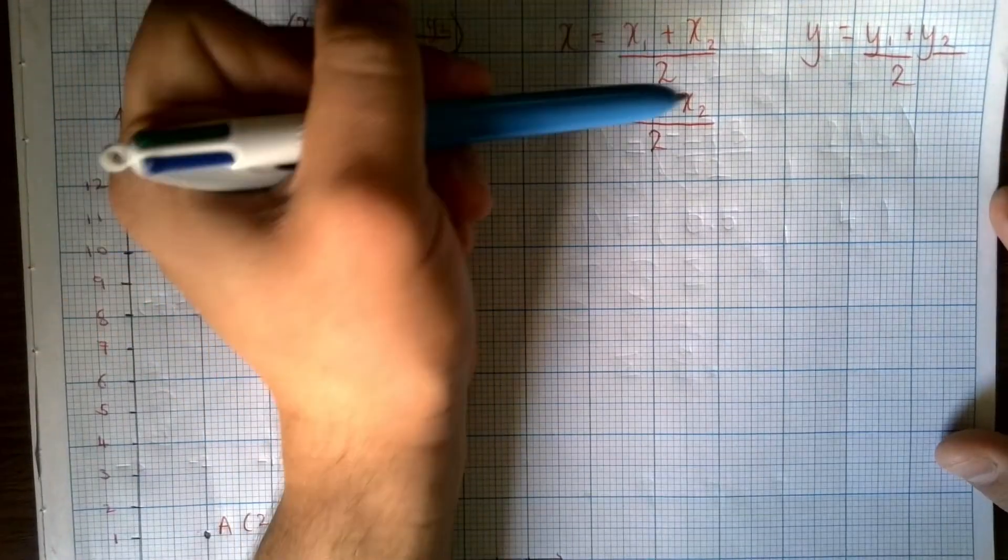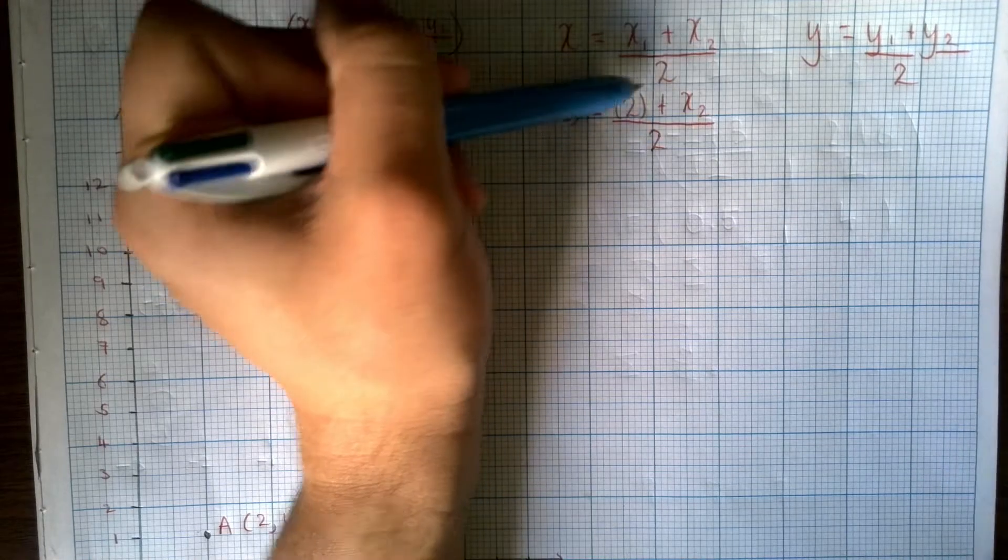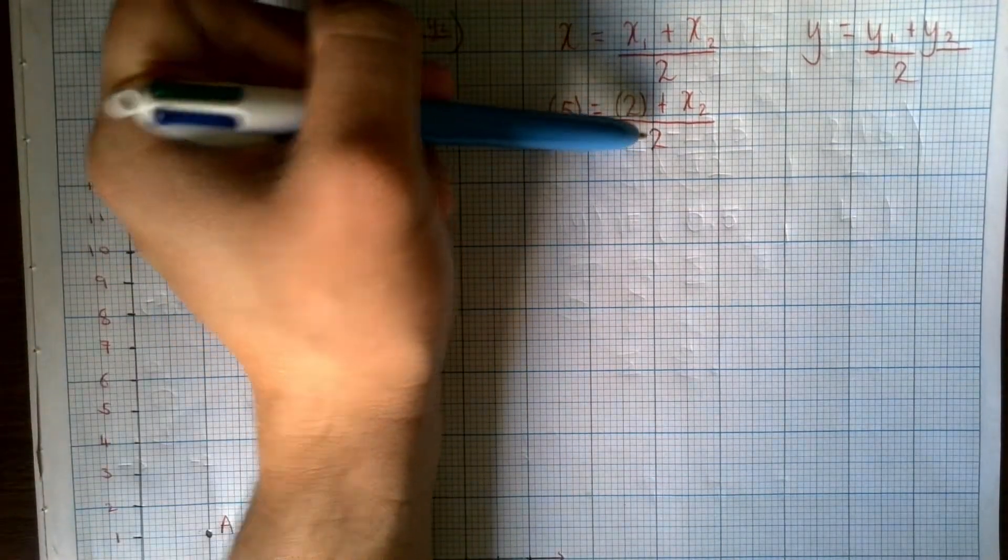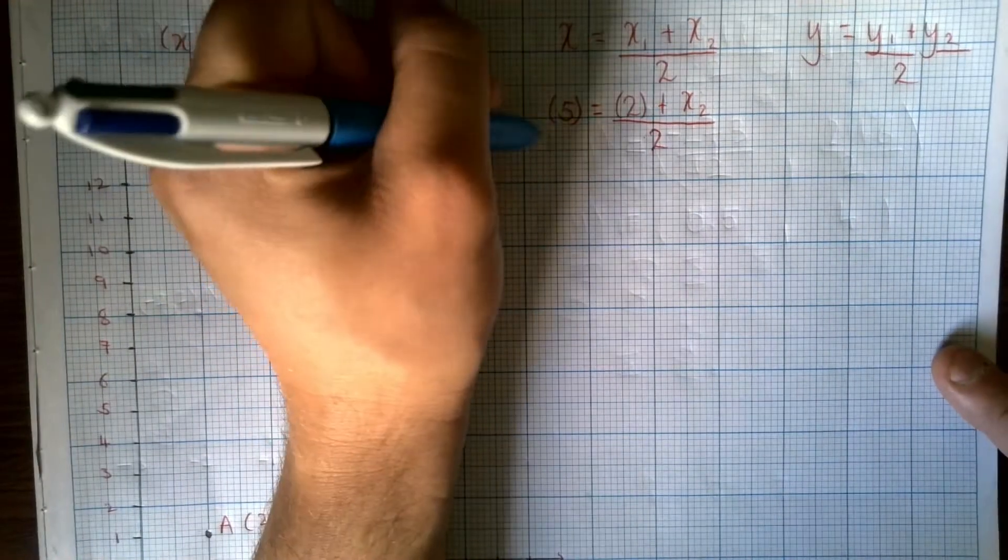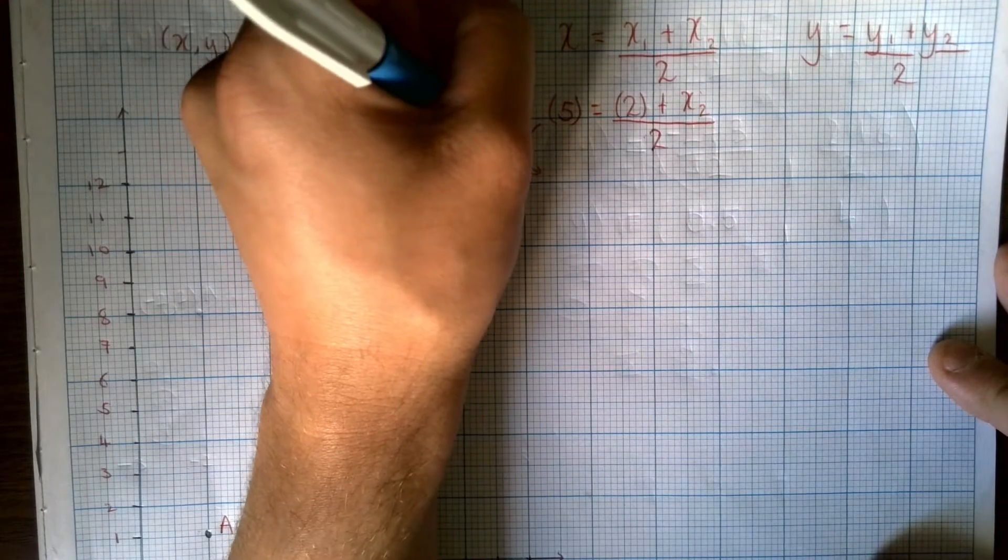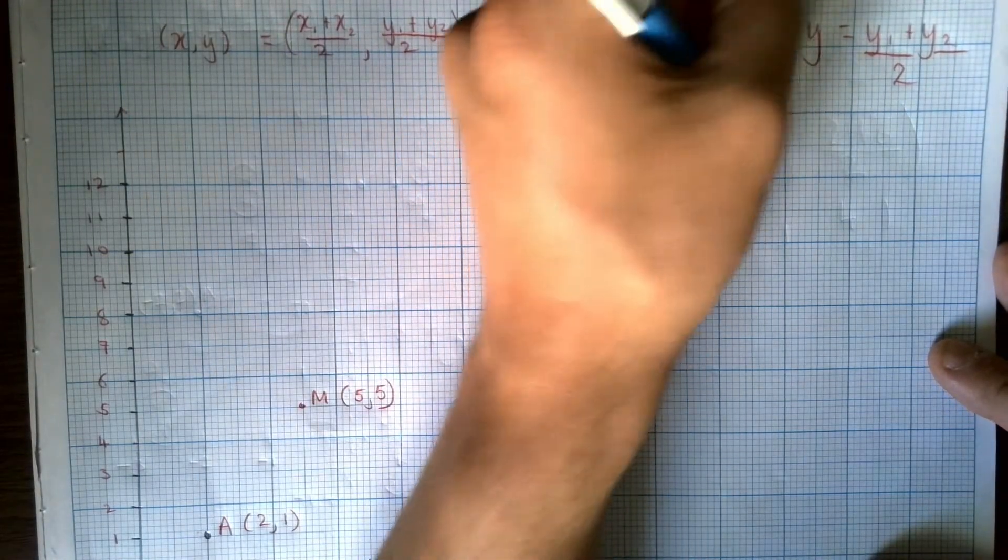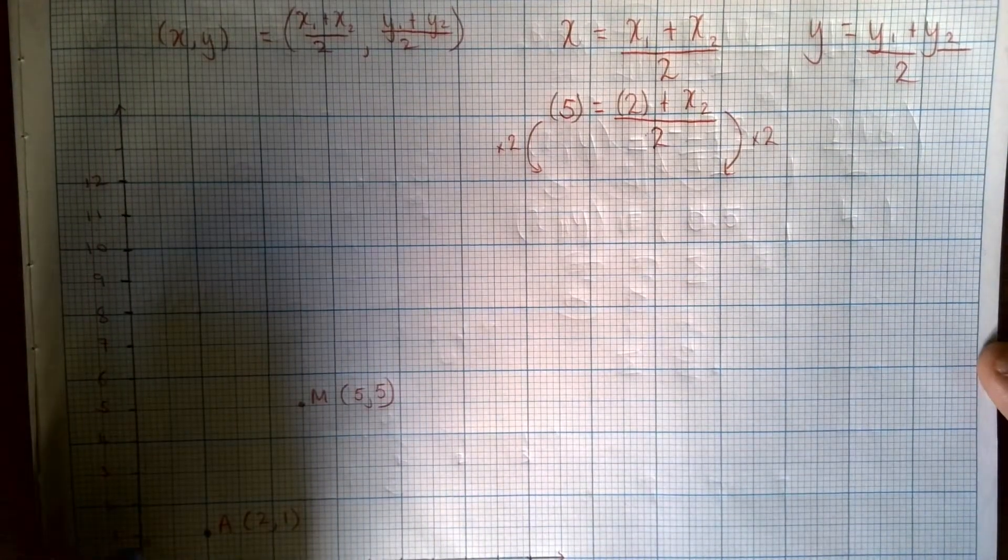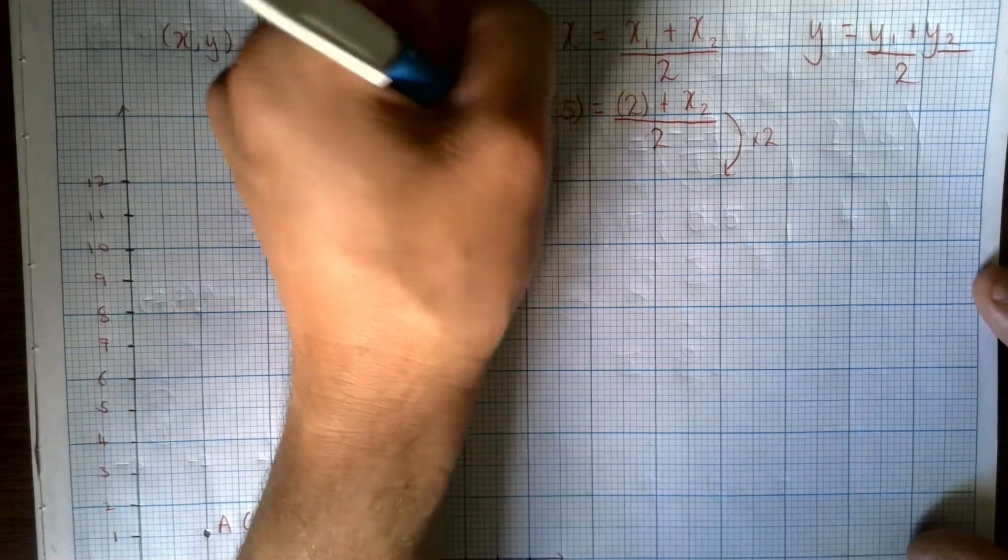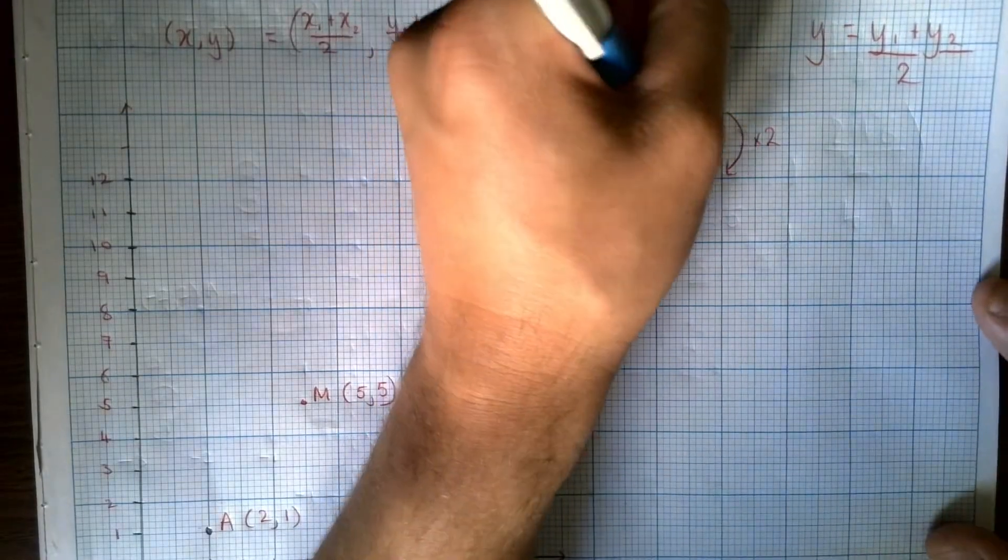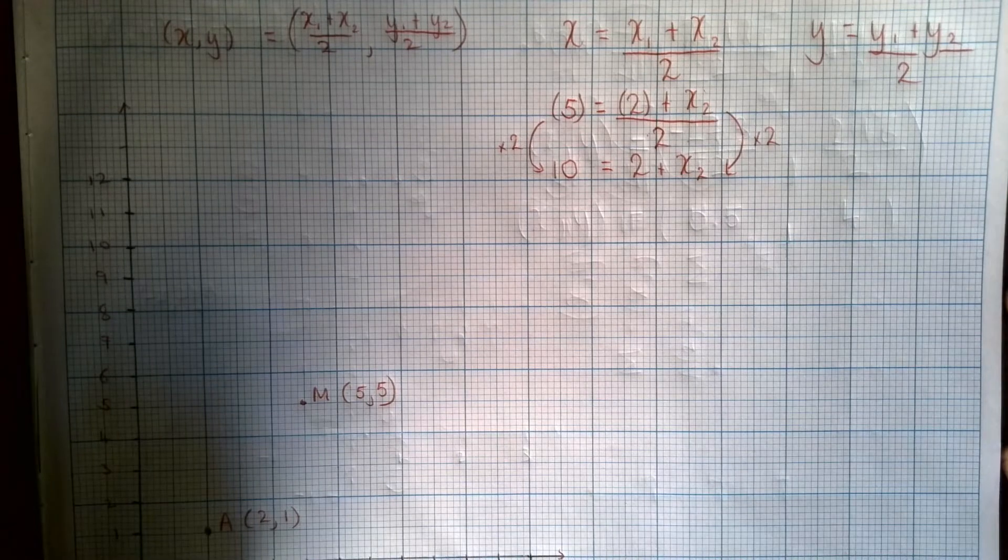So we'll work on this one first. I've got 5 equals 2 plus something all over 2. Now, order of operations says that we can't get rid of anything in that top half of the fraction. We need to multiply by 2 to eliminate that all over 2. You can use your arrows if you want to. And we're balancing equations, which means that we have to do the same thing to both sides. So times both sides by 2, that's going to give me 10 equals 2 plus X2 there.